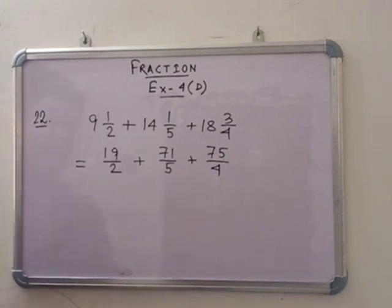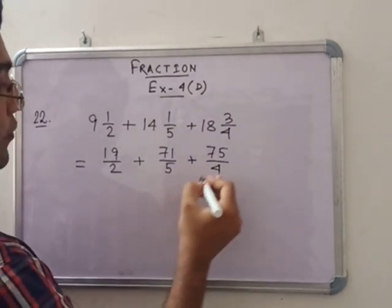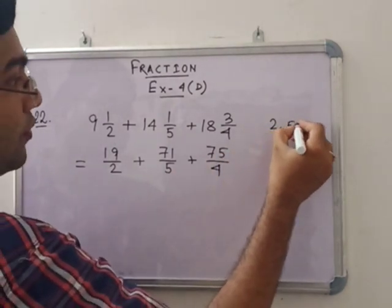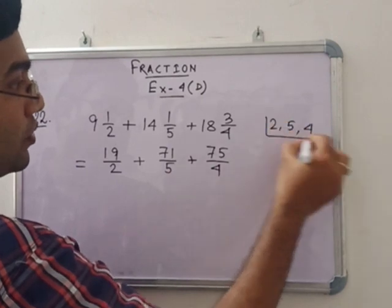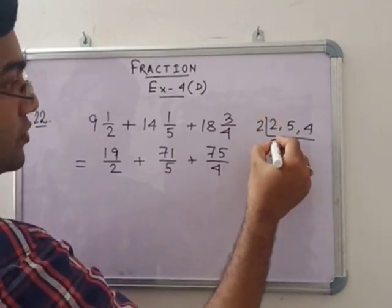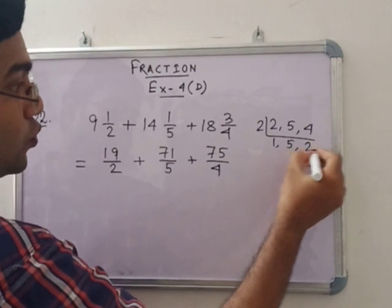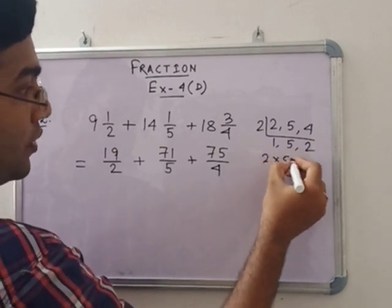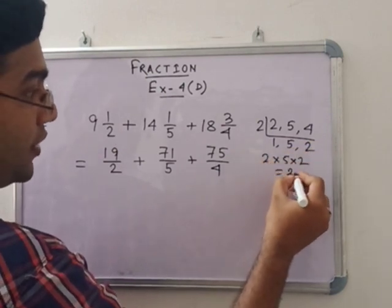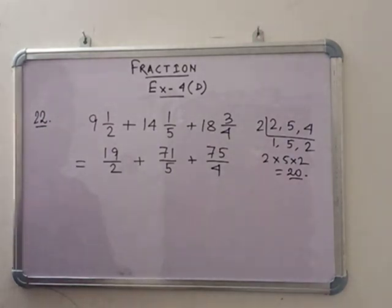Now see that the LCM of 2, 5, and 4. So if 2 is divided, so 1, 5, and 2. That means 2 into 5 into 2, that means 20. So 20 is the LCM here.